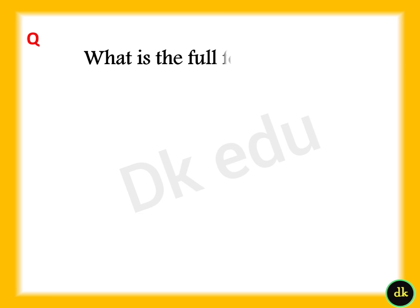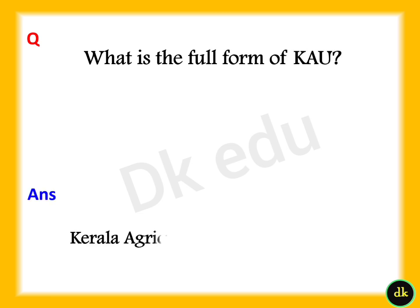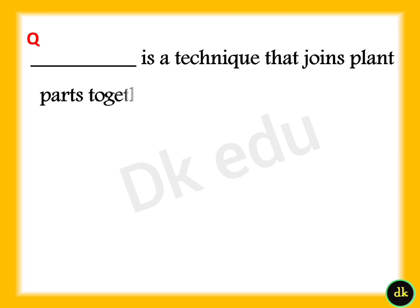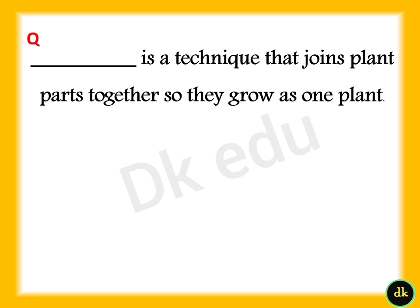What is the full form of KAU? Answer: Kerala Agricultural University. Dash is a technique that joins plant parts together so they grow as one plant. Answer: Grafting.